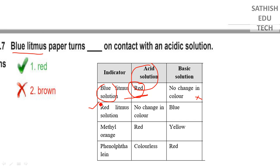The color can be observed in the basic solution — you will see the blue color. For example, if you use red litmus paper, you will see the color change.